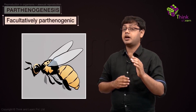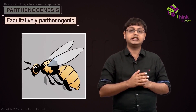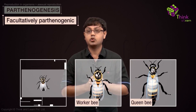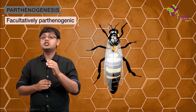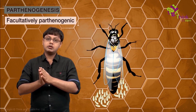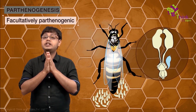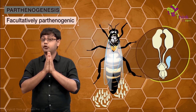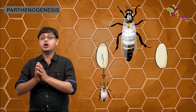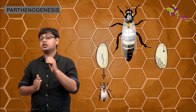Honeybees are facultatively parthenogenic and have an intricate social organization. There are three social classes: queen bees, worker bees, and drone bees. The queen bee holds the superior position in the colony and lays all the eggs, being the only bee with fully developed ovaries and lifelong fertility. After only one mating flight, where the queen mates with a couple of male drone bees, she stores the sperm to later fertilize some of the eggs. The eggs she chooses to have fertilized develop into female worker bees, and the eggs that develop without fertilization produce male drone bees.